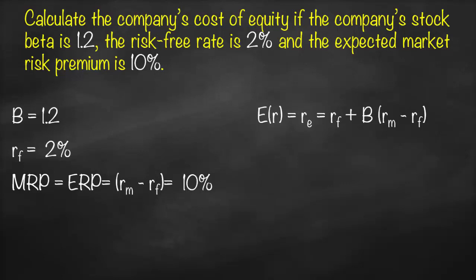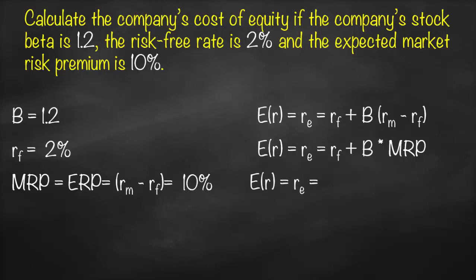Since market return minus risk free rate is called the market risk premium or equity risk premium, we can rewrite the formula as: cost of equity equals risk free rate plus beta multiplied by market risk premium. Substituting: expected return or cost of equity equals 2% (risk free rate) plus 1.2 (beta) multiplied by 10% (market risk premium). This gives us our cost of equity equal to 14%.